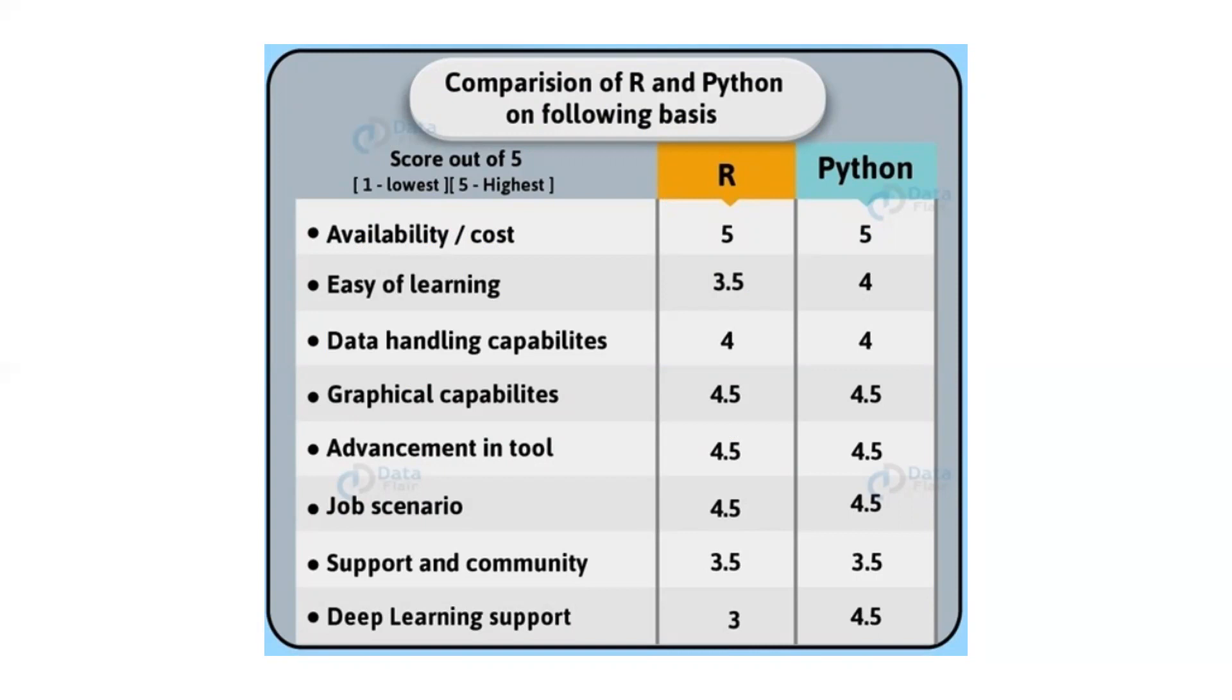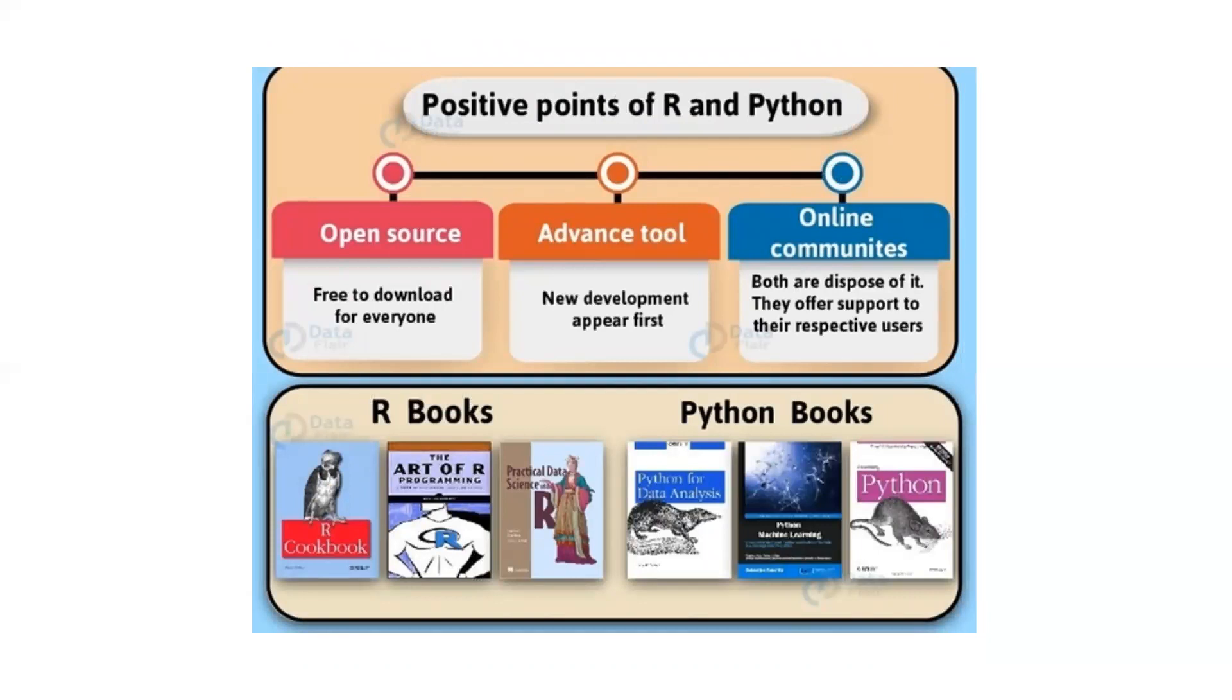The positive points of R and Python are open source, advanced tools, and online communities. You can easily install both systems for free. Python's advantages include free availability, stability, easy integration using C or Java, support for multiple platforms, ease of learning for novice developers, and ample online resources.